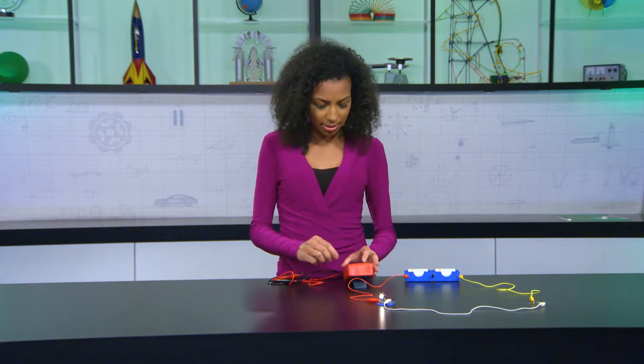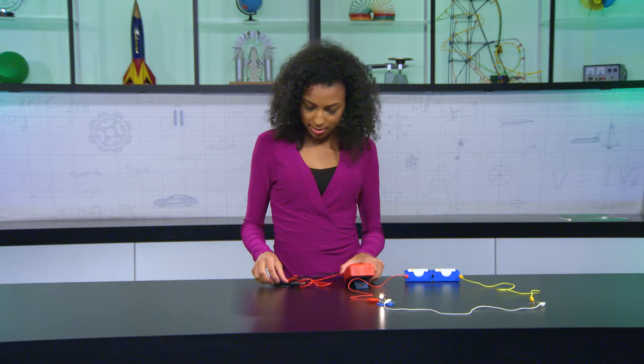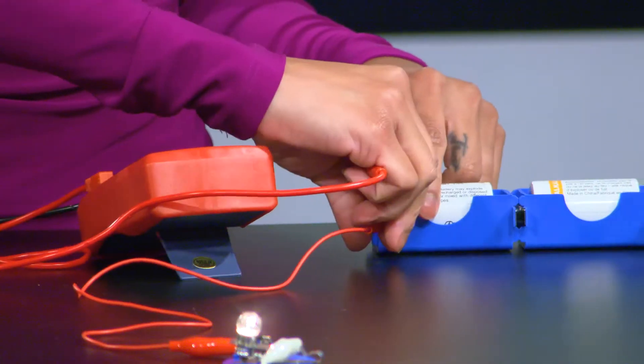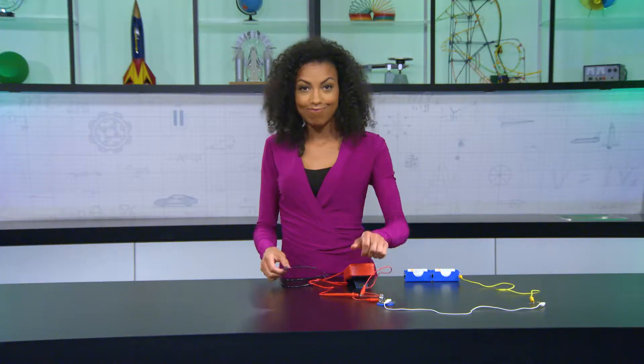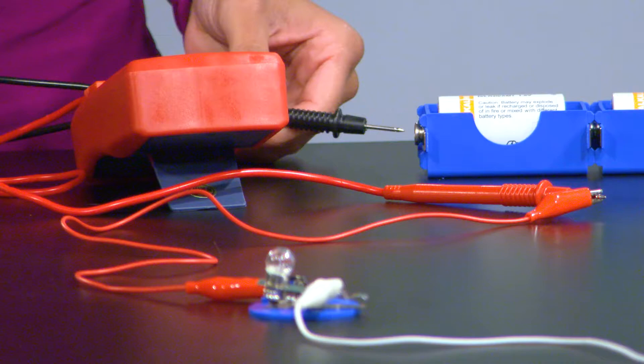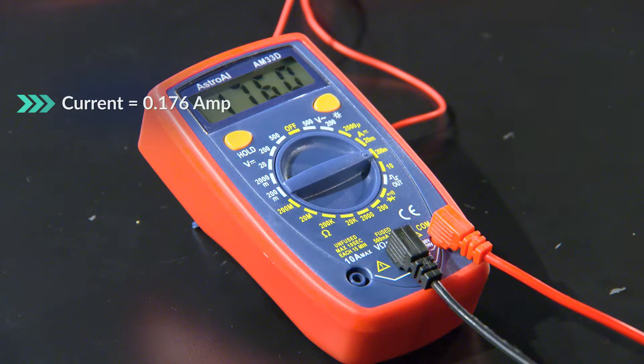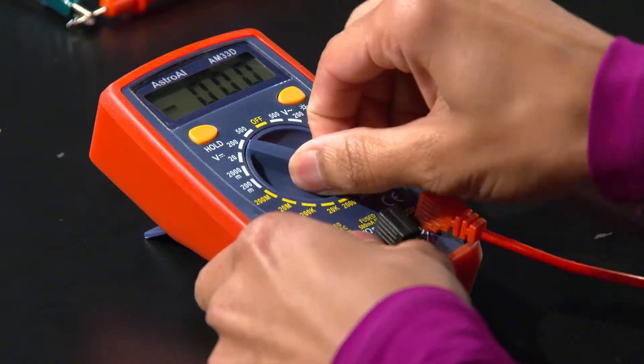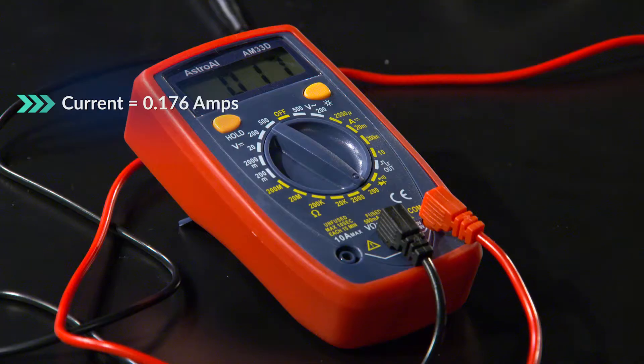Now let's find out what the current is in the resistor, and also measure its resistance. If we connect a multimeter into the circuit like this, we can make it measure current, which is expressed in amps. And it's reading out 176 milliamps, or 0.176 amps. If we change the multimeter settings, we can measure the resistance in a unit called ohms, named after our guy George.